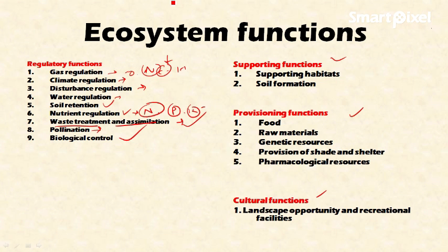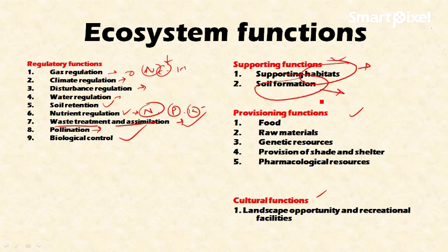The second important category is supporting functions. As discussed previously, for a particular organism there is a particular niche which supports its habitat. The ecosystem provides habitat to organisms. Soil formation is also provided by the ecosystem through the interaction of living organisms such as fungi and bacteria.